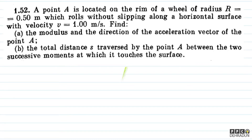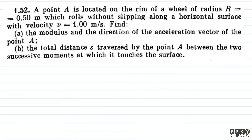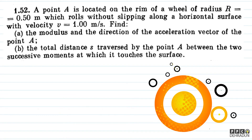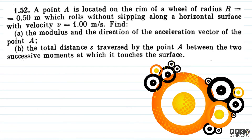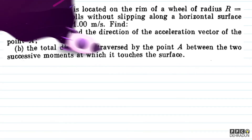The question says: A point A is located on the rim of a wheel of radius R = 0.5 meter, which rolls without slipping along a horizontal surface with velocity V = 1 meter per second. Find the first part — the modulus and direction of the acceleration vector of point A — and the second part — the total distance S traversed by point A between two successive moments at which it touches the surface.